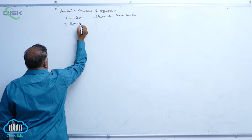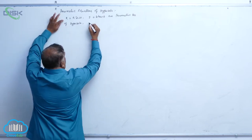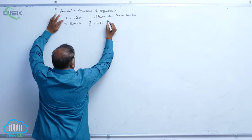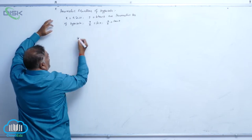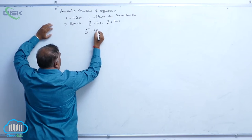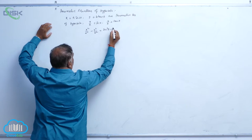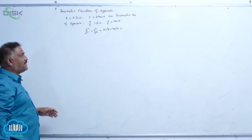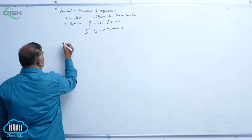If anybody has a doubt, let us recheck. We have x by a equal to secant theta and y by b equal to tan theta. Squaring and subtracting: x squared by a squared minus y squared by b squared equals secant squared theta minus tan squared theta, which equals 1.